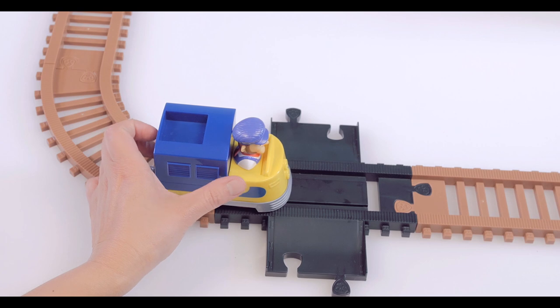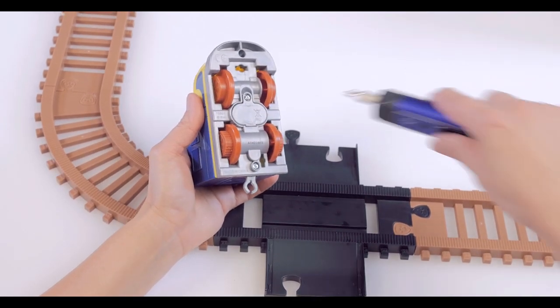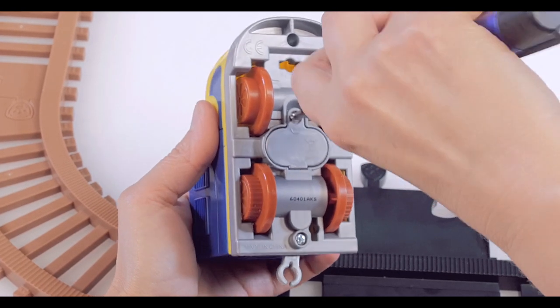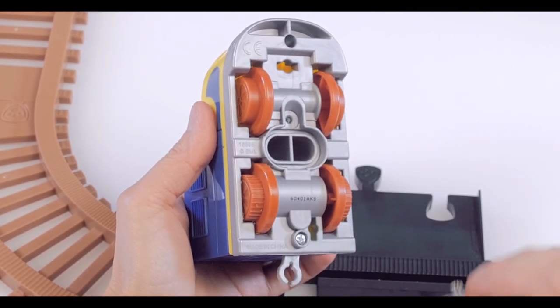Here's how to add the batteries. The motorized train racer will require two AAA batteries, not included. To change the batteries, have Mom or Dad open the battery door with a Phillips screwdriver.